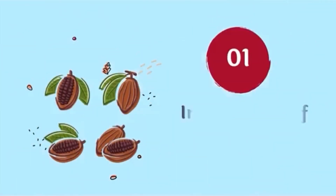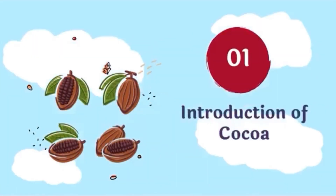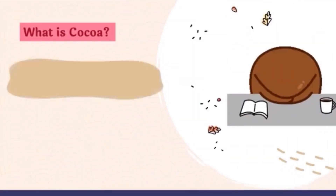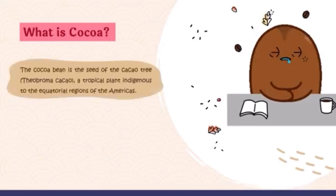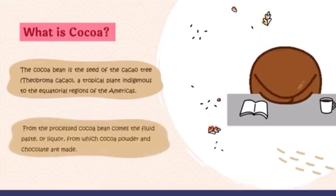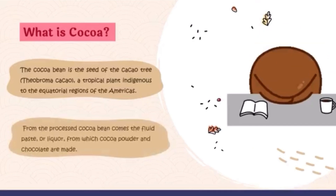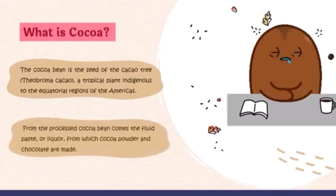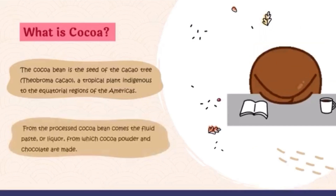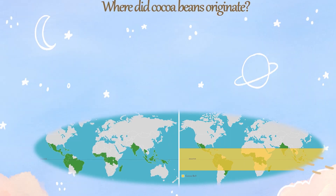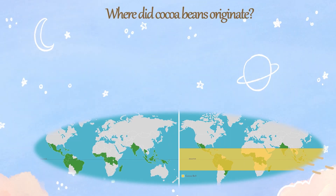Firstly, introduction of cocoa. Do you know what is cocoa? The cocoa bean is the seed of the cacao tree, Theobroma cacao, a tropical plant indigenous to the equatorial regions of the Americas. From the processed cocoa bean comes the fluid paste or liquor from which cocoa powder and chocolate are made.